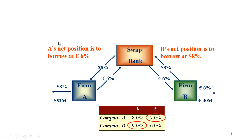This swap allows both firms to benefit from borrowing where they have an advantage and swapping with a firm that borrows where they have an advantage. The US firm borrows in the US in dollars, firm B borrows in France in euros, and they exchange the cash flows — both firms are better off. This is a relatively simple example of a currency swap, but it shows that there can be real advantages to firms by using this rather than just going out and buying foreign currency.